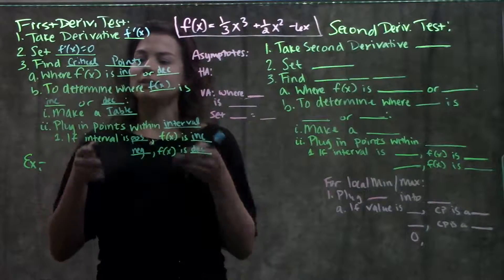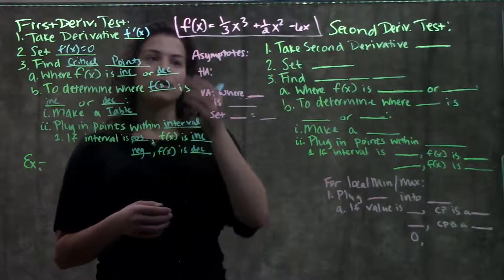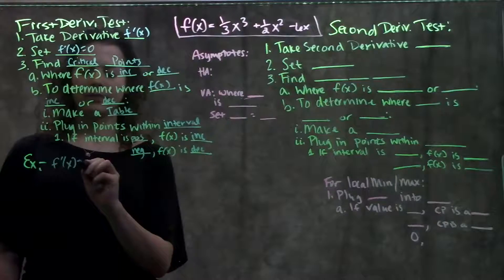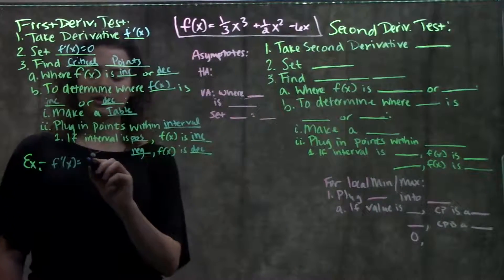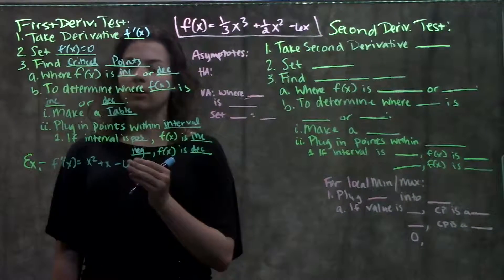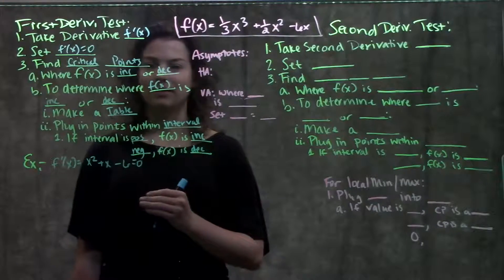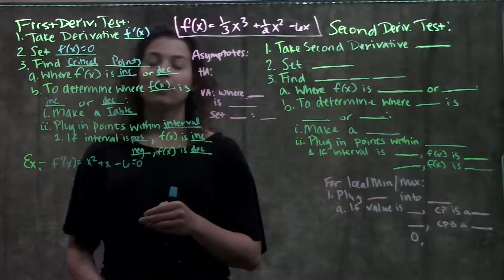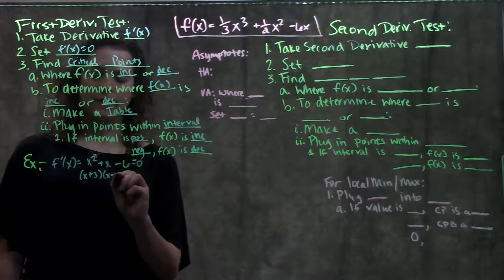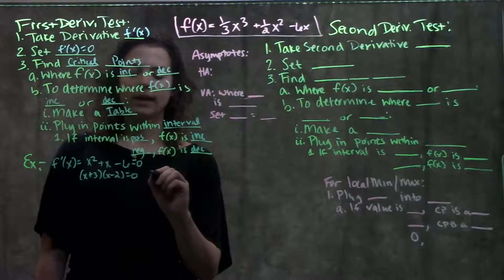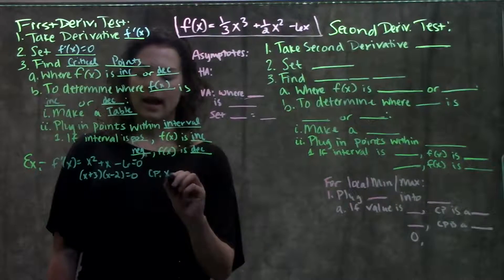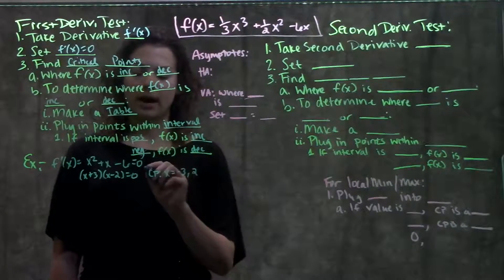Let's go through this process and apply it to this problem. We're given this function f of x. To find the critical points, the first step is to take the derivative. The derivative of this function becomes x squared plus x minus 6. To find our critical points, we set this equal to zero and solve for x. Since we have a quadratic, we factor it into two binomials: x plus 3 and x minus 2. Solving for x, our critical points are at x equals negative 3 and x equals positive 2.